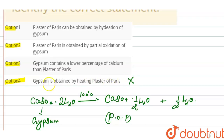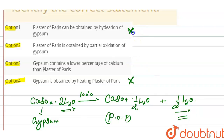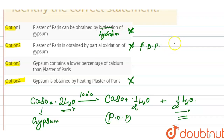Because plaster of Paris can be obtained by heating gypsum, so Option 4 is incorrect. Our Option 1 states plaster of Paris can be obtained by hydration of gypsum — this is also incorrect, because it is obtained by dehydration of gypsum, as a water molecule is released. Option 2 states plaster of Paris is obtained by partial oxidation of gypsum — this is also incorrect, because it is obtained by dehydration of gypsum.